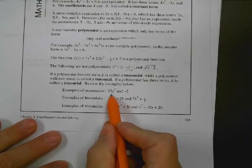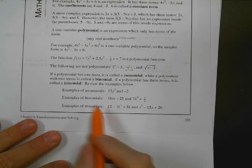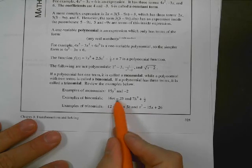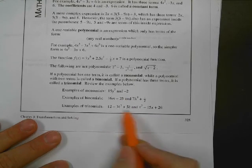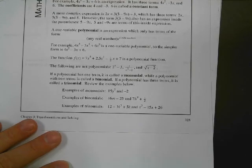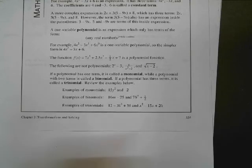So monomials would just be one single term. Binomials would be when we have two terms. And then trinomials is three terms. All right. So just a lot of terminology that you might be expected to know from here on out. All right. That's all I got. Short one.